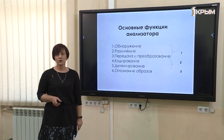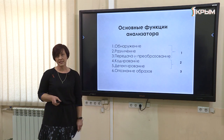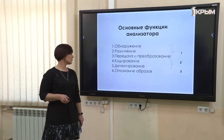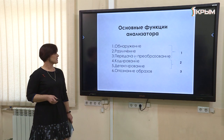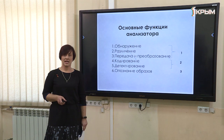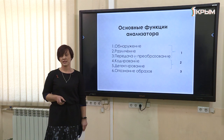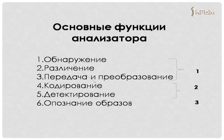Шестая функция — опознание образов. Эту функцию берёт на себя кора больших полушарий: она создаёт образ, анализирует его, сравнивает с ранее полученными образами и оставляет их в памяти. Это основные функции каждого анализатора нашей сенсорной системы. Каждый анализатор работает как единое целое, и если произойдёт нарушение хотя бы одного звена — анализатор работать не будет. Все анализаторы работают вместе, и благодаря им мы получаем полную картину об окружающем мире и внутренних изменениях организма.